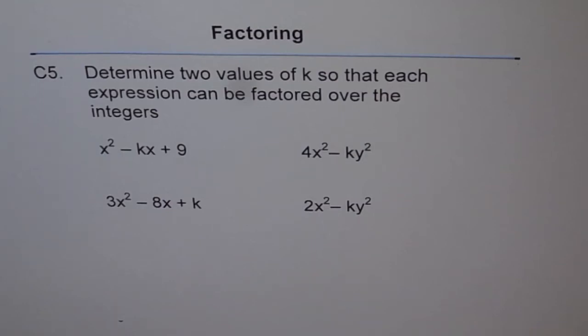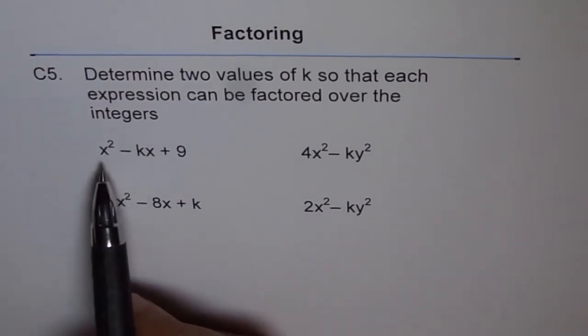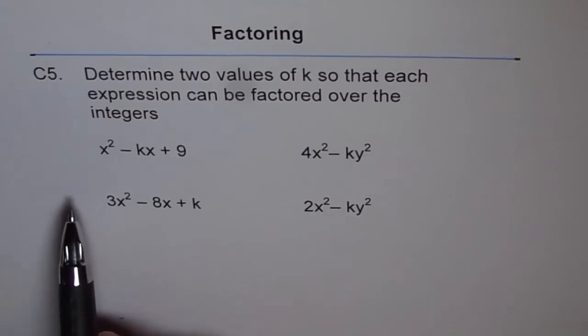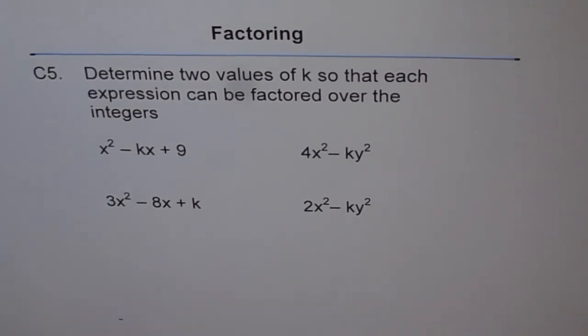C5. Determine two values of k so that each expression can be factored over the integers. Okay, so let's look into the first one. Well, I'll appreciate if you could copy all those four questions and try it on your own.